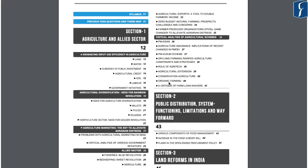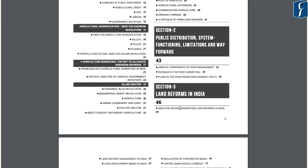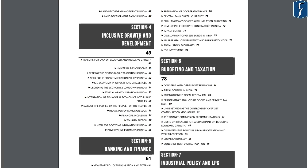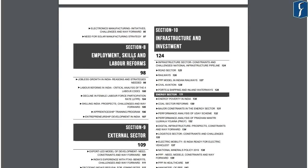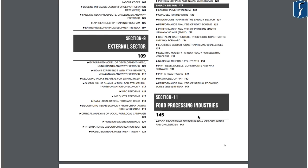The Mains Compass for economic development has been categorized as per sections, which include agriculture and allied sector, public distribution system, functioning limitations and way forward, land reforms in India, inclusive growth and development, banking and finance, budgeting and taxation, industrial policy and LPG, employment skills and labor reforms, external sector, infrastructure and investment sector, as well as food processing and industries.